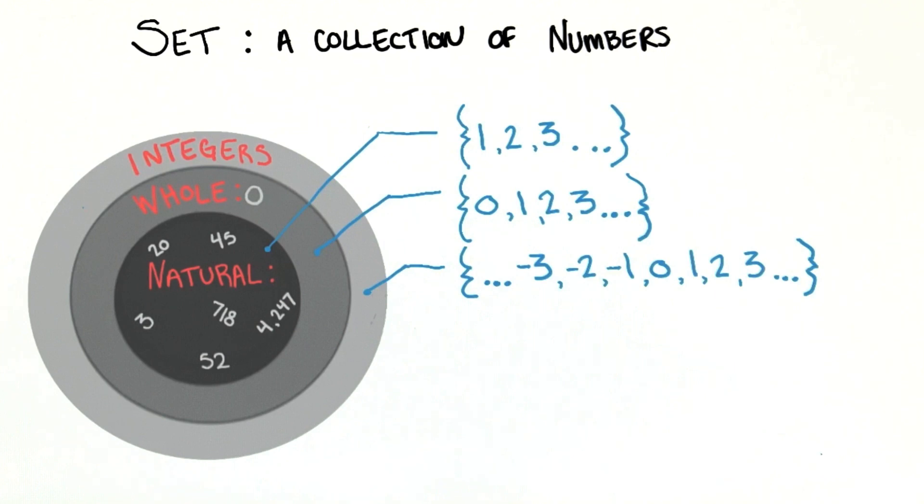We usually denote sets with these curly braces around the numbers and commas between the numbers. We give certain sets, like the ones we've talked about, special names. But really, a set could be made up of any numbers that we put together for whatever reason.